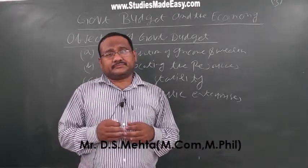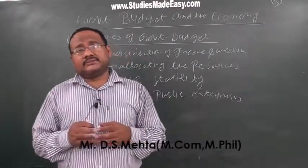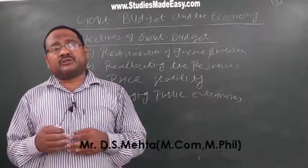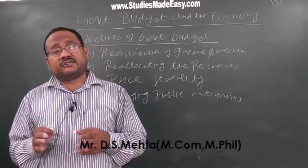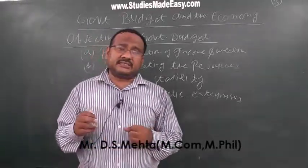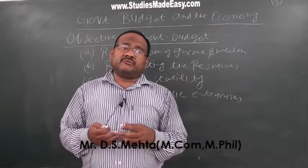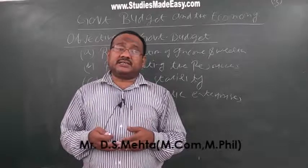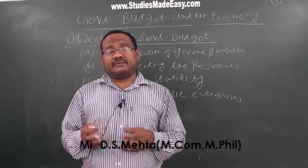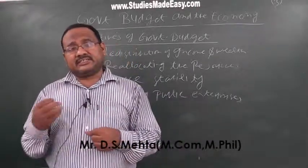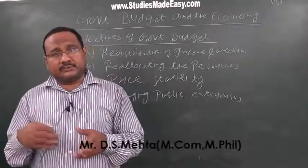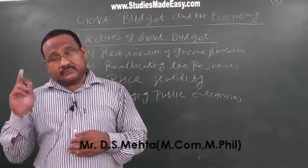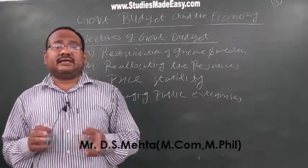The last objective is managing public enterprises. The main objective of private entrepreneurs is to earn maximum profit, and generally they do not work for social welfare. That is why government has to make a balance between profit maximization and social welfare. Some organizations are opened by the government for the welfare of the general public, like railways and health, so that maximum benefit could reach those who need it most. Government opens the rail department and health department for social welfare, and makes investment in education so that maximum benefit reaches all sections of society.